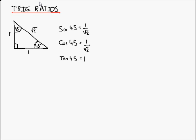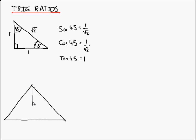This isn't the only trig ratio triangle. There's also this one — a right angle triangle with angles of 30 and 60 degrees. This triangle has sides of 1, root 3, and 2.